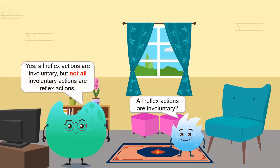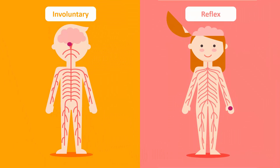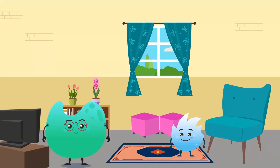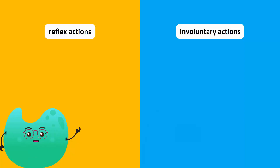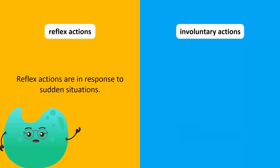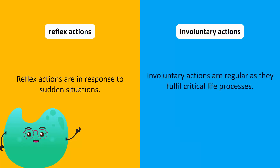Are all reflex actions involuntary? Yes, all reflex actions are involuntary, but not all involuntary actions are reflex actions. Involuntary actions involve the unconscious part of the brain that carries out those actions, but the reflex actions pathway is directly through the spinal cord and does not involve any part of the brain. That's why reflex actions are quick. Also, reflex actions are in response to sudden situations, whereas other involuntary actions are regular as they fulfill critical life processes.